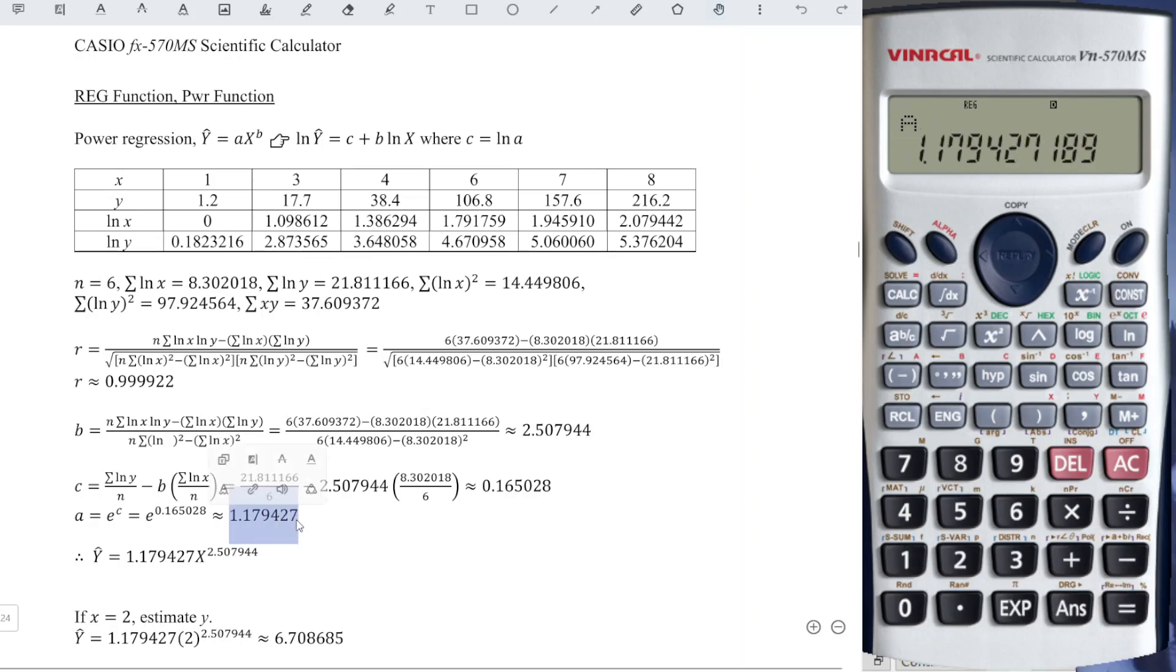However, if we want to obtain the value by using formula, which means that we are not able to obtain A directly, then we must apply the formula. As we can see, c is equal to ln A, which means that we have to undo ln the value. This means we have to apply exponent c. After we take the exponent value, then we will obtain the value of A.